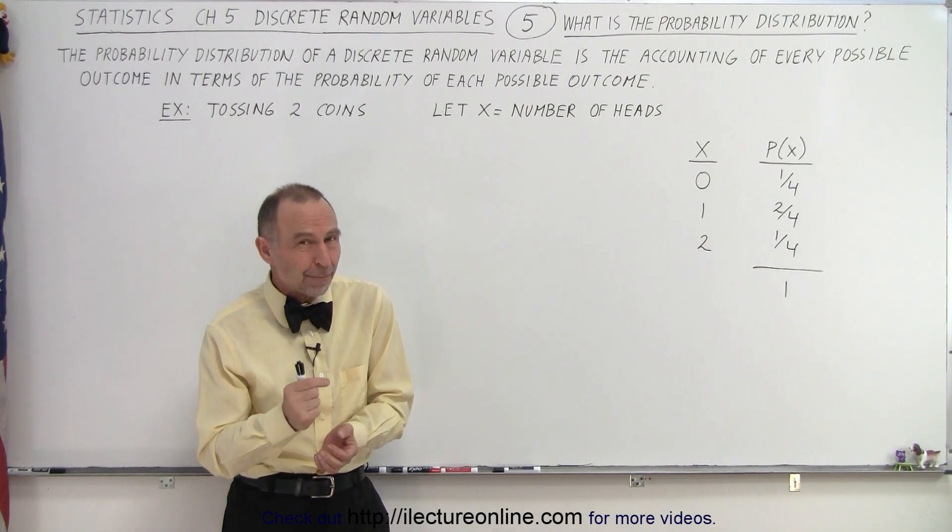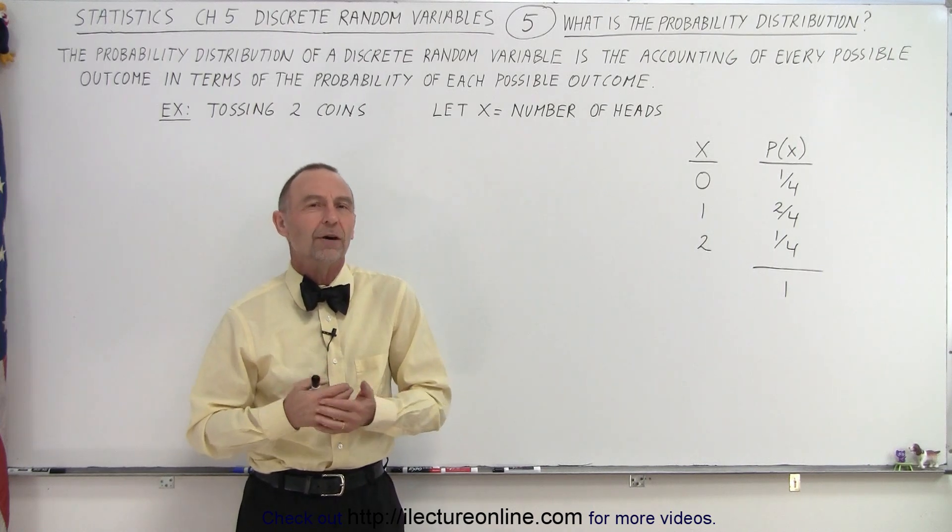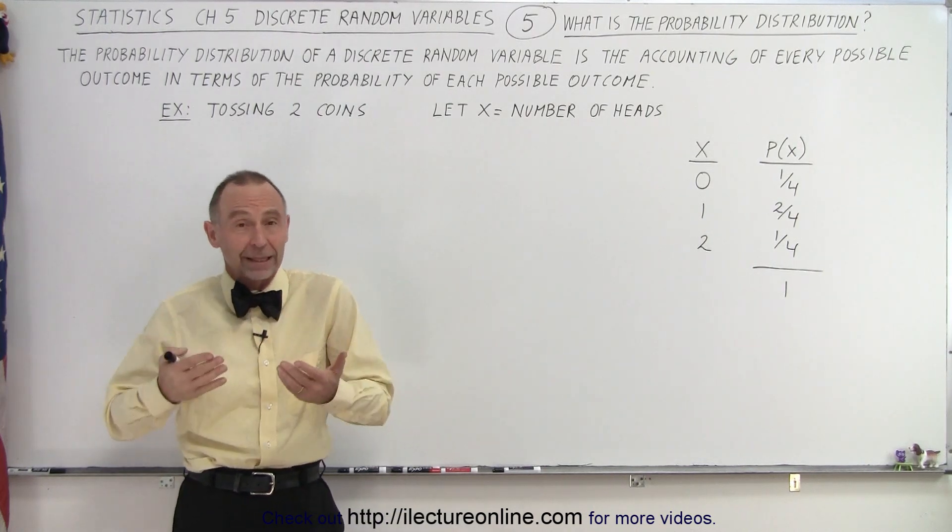the probability of particular outcomes. In essence, the probability of every possible outcome. And so we end up with what we call a distribution of probabilities: the probability distribution.